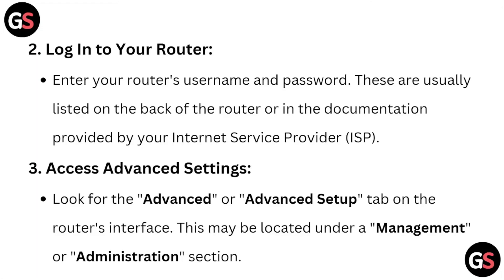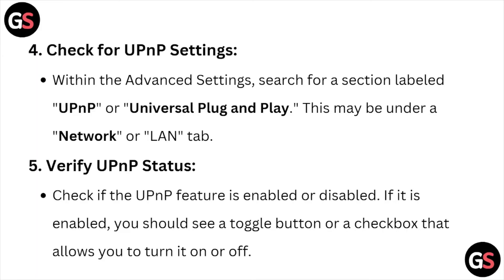The third step is to access the advanced settings. Look for the advanced or advanced setup tab on the router's interface — this may be located under a management or administration section. The fourth step is to check for the UPnP settings. Within the advanced settings, search for the section labeled UPnP or Universal Plug and Play. This may be under the network or the LAN tab.